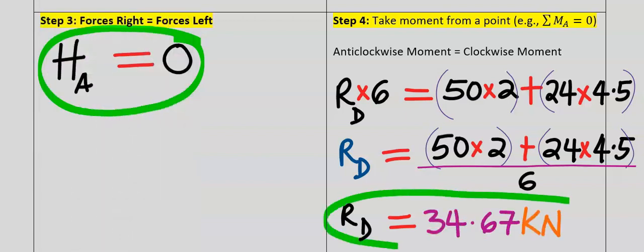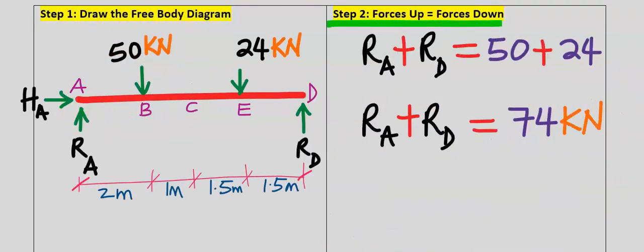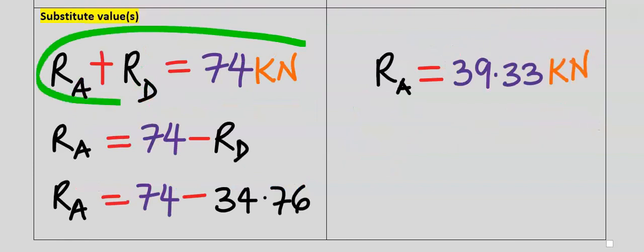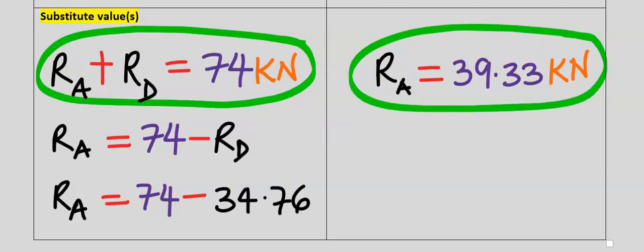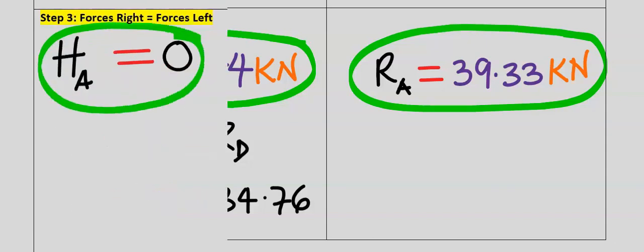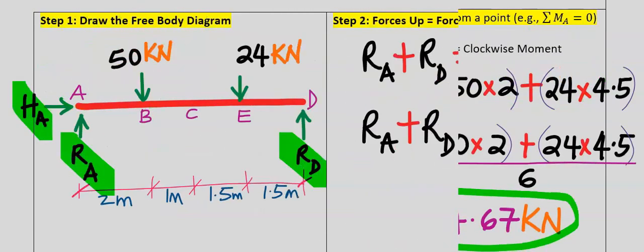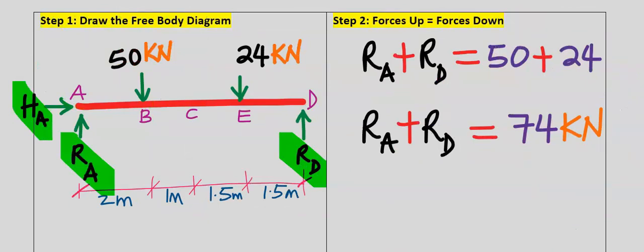We have obtained the second result. From step two, substituting back in and solving, the reaction force at point A is 39.33 kilonewtons to two decimal places. Having obtained all the reaction forces for the free body diagram, we are done.